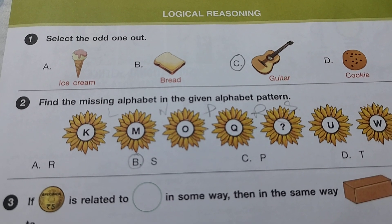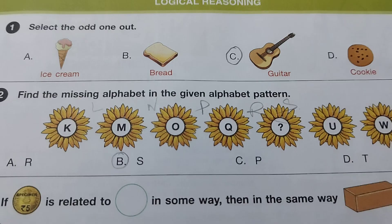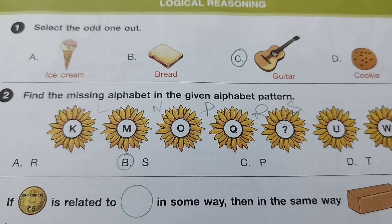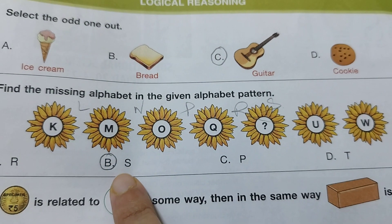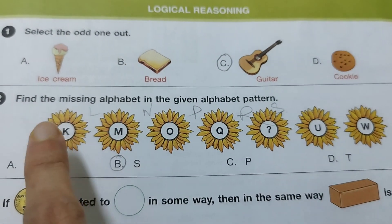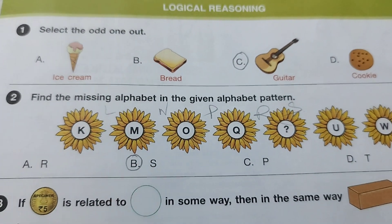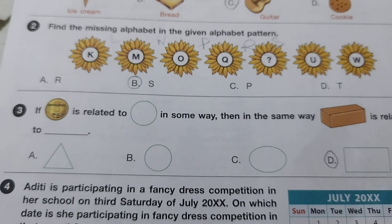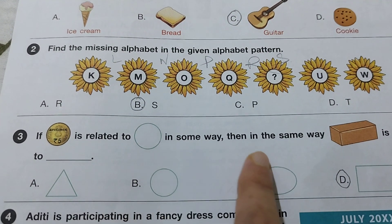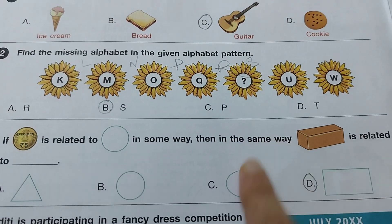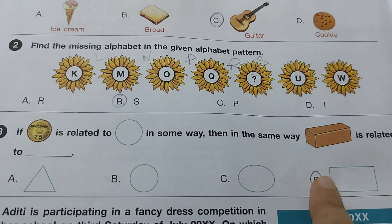Question one: select the odd one out. The answer is C — it's guitar. Question two: find the missing alphabet in the given alphabet pattern. The answer is S. For example: K, L, M, N, O, P — so the option is P. Question three: if a rupees 5 coin is related to a circle in some way, then this rectangle shape resembles which shape? Option D — rectangle.